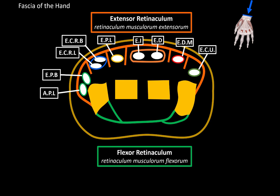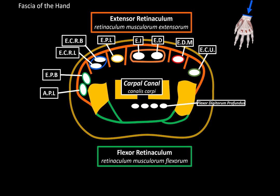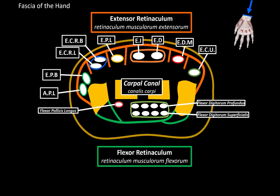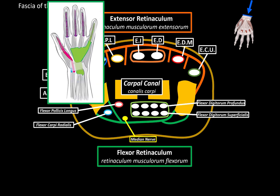Now let's do the flexor retinaculum. The flexor retinaculum also forms canals. The first canal is called the carpal canal, which contains the tendons for the flexor digitorum profundus and flexor digitorum superficialis — these eight tendons are grouped as a tendinous sheath. Then we have the flexor pollicis longus, also surrounded by its own tendinous sheath. Another structure in the carpal canal is the median nerve, so pressure in the carpal canal can press on the median nerve, causing chronic pain.